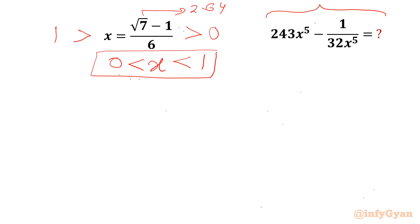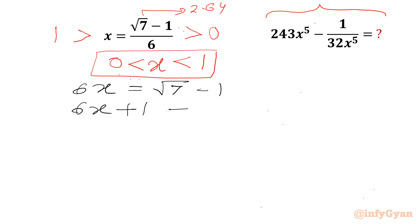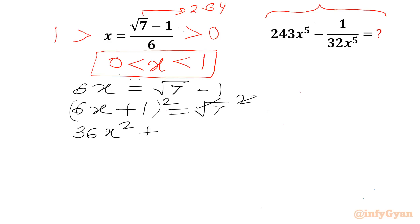Now I will cross multiply, so I can write 6x = √7 minus 1. Adding 1 to both sides gives 6x + 1 = √7. Squaring both sides, the square root and square cancel, giving us 36x² + 12x + 1 = 7.